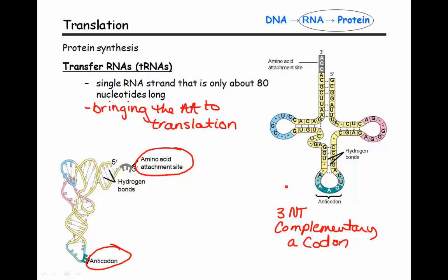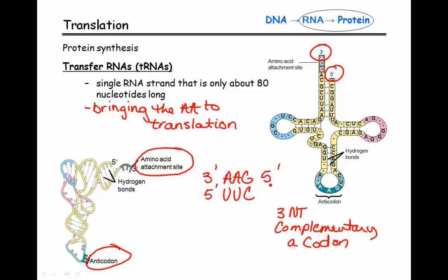Looking more closely at this particular anticodon, this one is AAG. Writing down the polarity, this is the three-prime end and then we have the five-prime end. So that anticodon is going to be complementary to a codon. The codon complementary to AAG would be UUC — U across from A, another U, and then a C — and it's also going to be antiparallel. Now we can figure out what amino acid is going to be attached on the other end of this tRNA molecule.